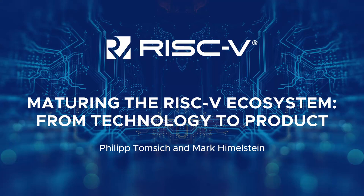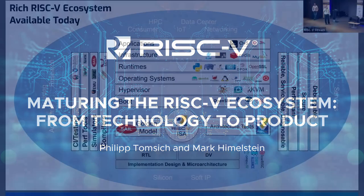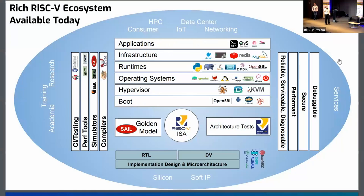I just want to go through this slide and tell you how to read it. The stuff in the middle — the RISC-V ISA, the Golden Model, and architecture tests — are things that RISC-V actually does.